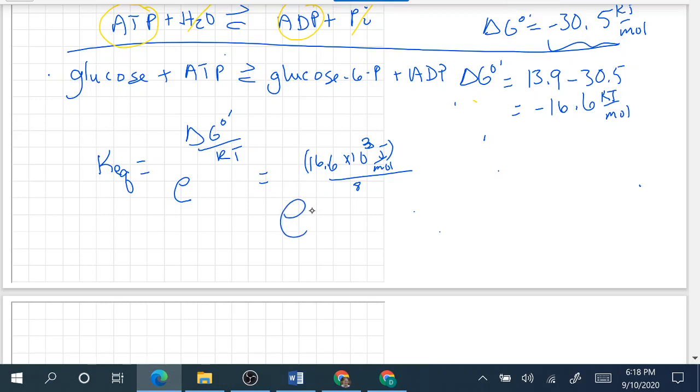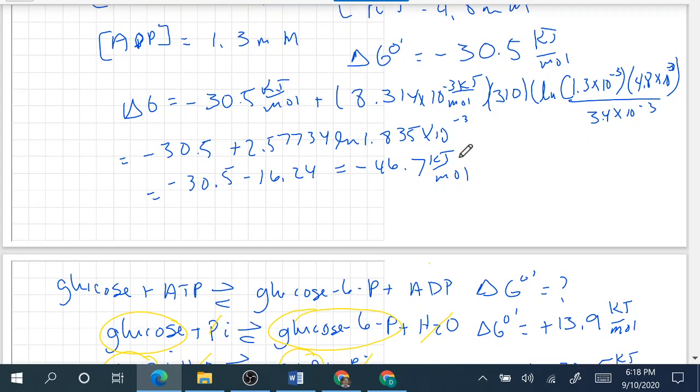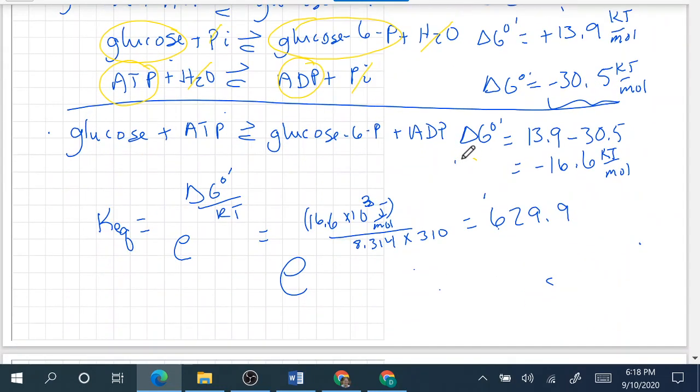That's going to be 629.9. Our temperature is 310 because we are inside a cell. 629.9 is our Keq.